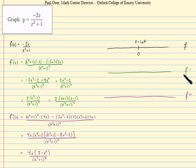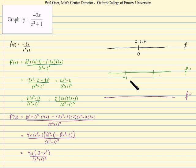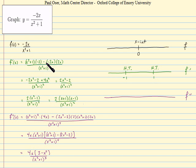Turning to the first derivative: looking at its factored form, the numerator is 0 when x equals 1, making one factor 0, or when x equals negative 1, making the other factor 0. We mark both on our green line. If the first derivative equals 0, the slope of the tangent line at that x value is 0, meaning we have a horizontal tangent line. As for where f prime is undefined: just as with the original function, the denominator is never 0, so this expression is never undefined — no additional points to mark.